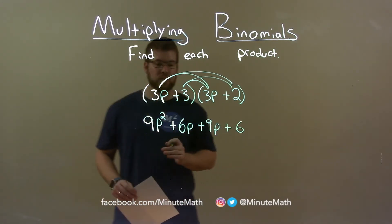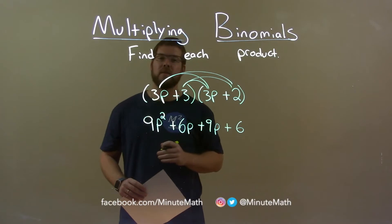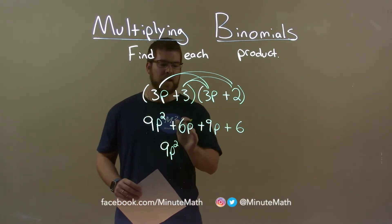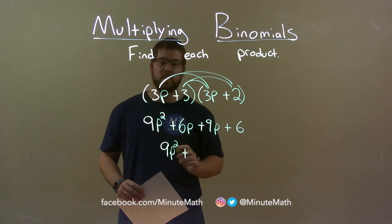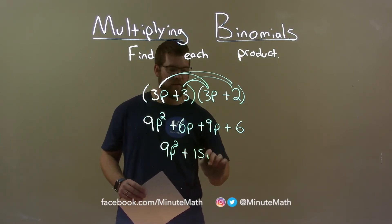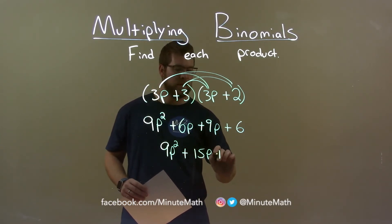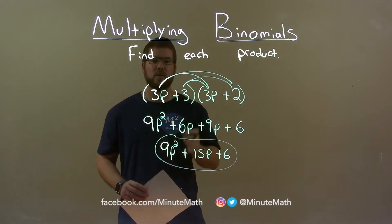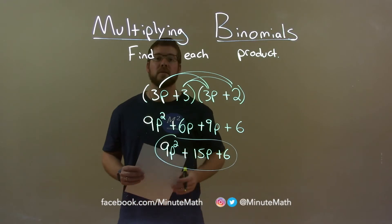We want to combine our like terms, which is the 6p and the 9p. 9p squared comes down, and 6p plus 9p is 15p. Then we bring down the plus 6. So our final answer is 9p squared plus 15p plus 6.